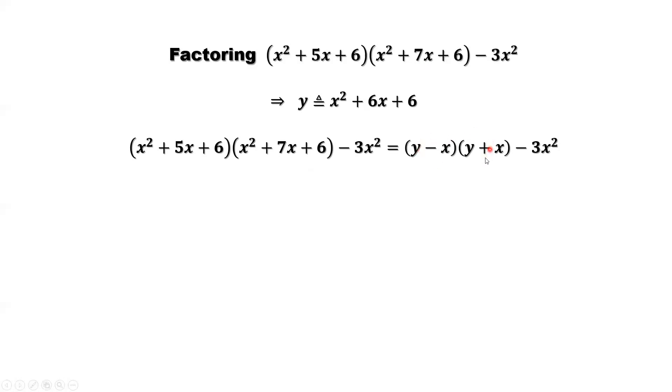Simplify this part. You can see y minus x, y plus x. It is y squared minus x squared. Then outside we have minus 3x squared. Simplify, we have y squared minus 4x squared.